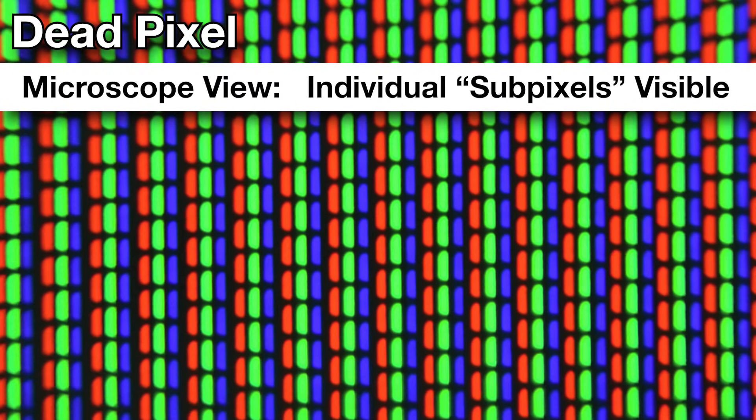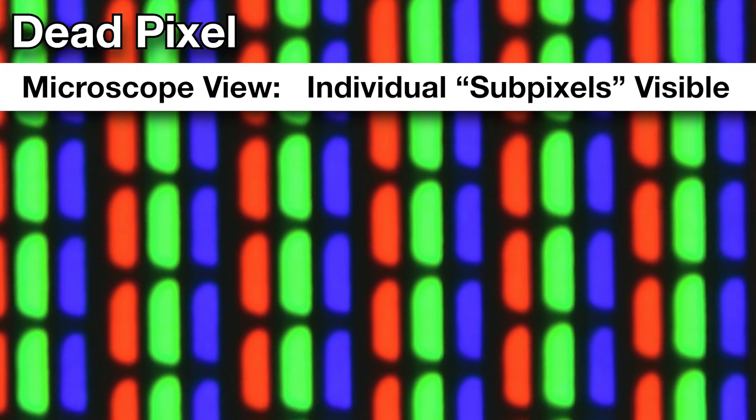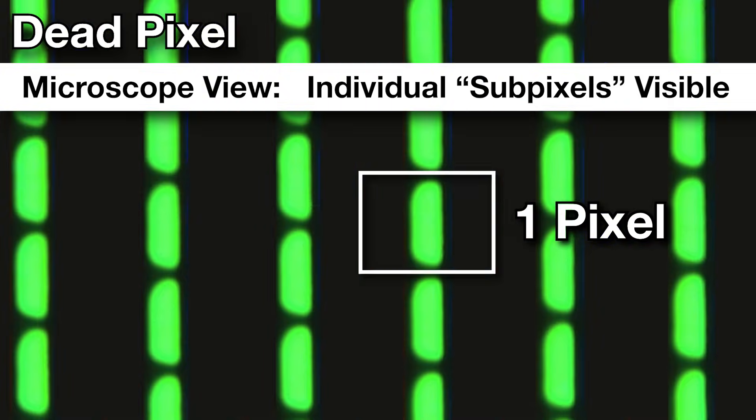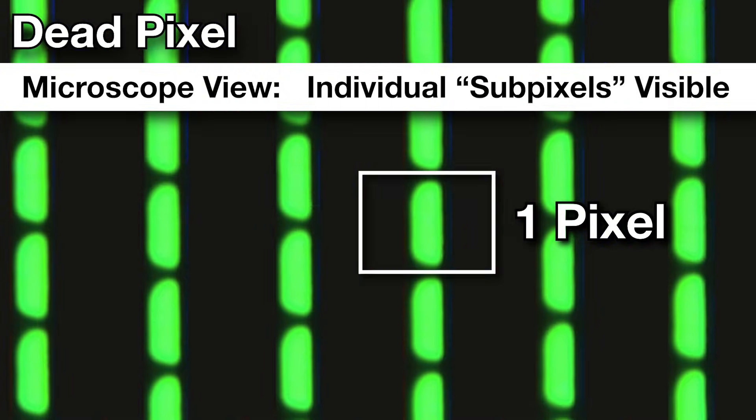A dead pixel is pretty easy to understand — it's just a pixel that is dead. It shows no light no matter what it's supposed to. Whether it's supposed to be red, green, or blue, it's just black. Now it could also be a dead subpixel, which means that only the red, green, or blue part of the pixel doesn't work. So if it's supposed to show green it might show green, but only when it's supposed to show blue on the screen it's then dark.